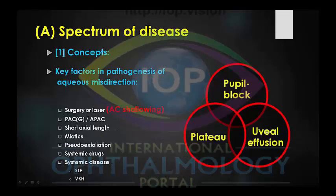When thinking about the pathogenesis of aqueous misdirection, I like to use the following Venn diagram to think about the components in pathogenesis. Pupil block is a very important component. The anatomy of the ciliary body — i.e., plateau iris configuration — is very important. But we must not forget the third component: the inflammatory component of uveal effusion.